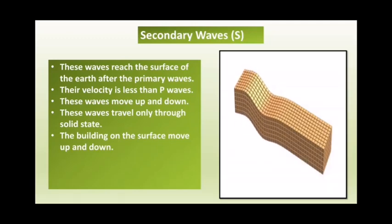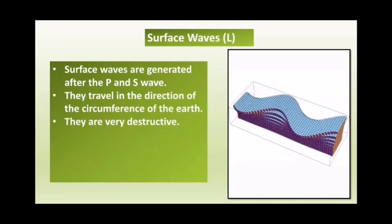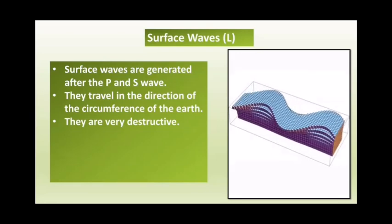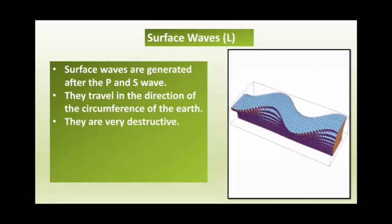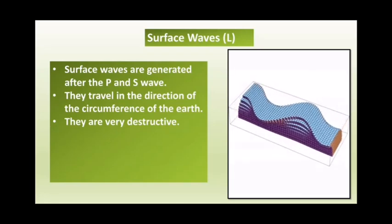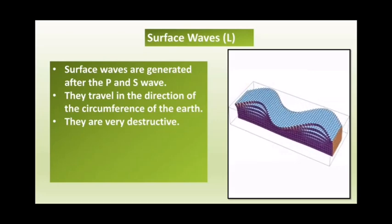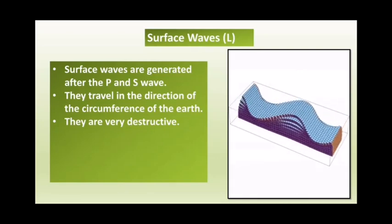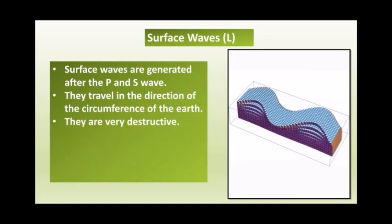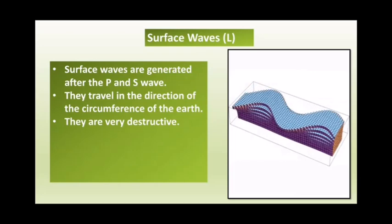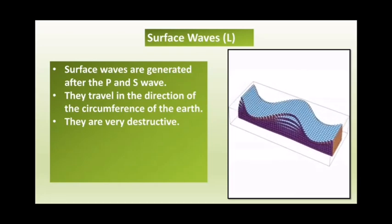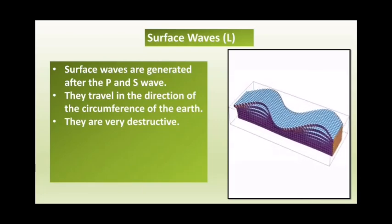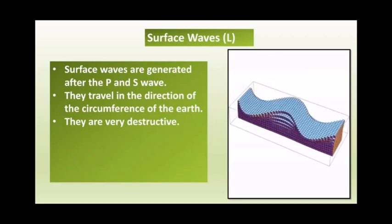The surface waves, also called L waves, are the slowest moving seismic waves. They cause the most damage to the earth because they bend and twist the earth's surface. These waves are generated after the main primary and secondary waves reach the epicenter. They travel in the direction of the circumference of the earth along the crust, and they are very destructive.